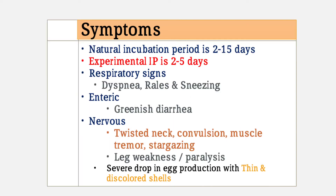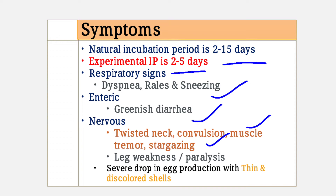Symptoms: the natural incubation period ranges from 2 to 15 days; experimental incubation is 2 to 5 days. Respiratory signs include dyspnea (labored breathing), rales, sneezing, and coughing. Enteric signs include greenish watery diarrhea. Nervous signs include torticollis (twisted neck), convulsions, muscle tremors, stargazing, and leg weakness or paralysis. There is also a severe drop in egg production with thin and discolored shells.